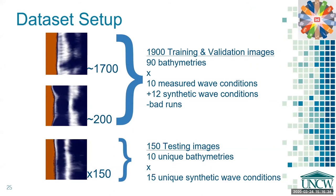The database setup is as follows: we have approximately 1700 training images from 1960 different model runs, broken down as 80 bathymetries run over 10 measured wave conditions and 12 synthetic wave conditions selected by a Latin hypercube approach. We had 200 validation images of 10 bathymetries run over these same wave conditions. Bad runs where videos were distorted were removed from the training data set. Our test set consisted of 150 testing images of 10 bathymetries run over 15 synthetic wave conditions selected from the Latin hypercube that were not seen during training.